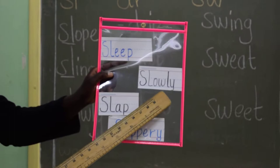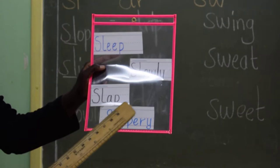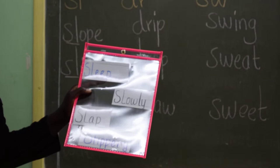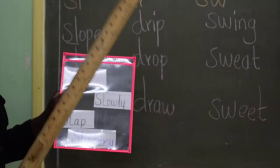Slap. Sleepily. I want you to think of a sentence you will make using these words, because they are words you can use in your day-to-day communication. Sleep — that's when at night you are resting, you sleep. Slowly — you sleep slowly.